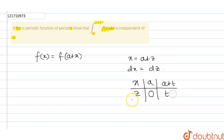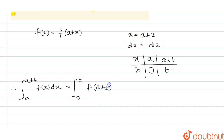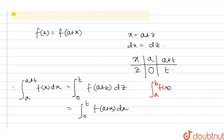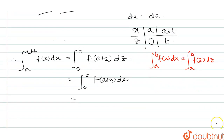Now the integration changes. The lower limit becomes 0 and the upper limit becomes t. So f of a plus z becomes f of a plus x dx. Using the property of integration, if the limits are the same, we can replace the dummy variable z with x. So f of a plus x, by the periodic function property, equals f(x).